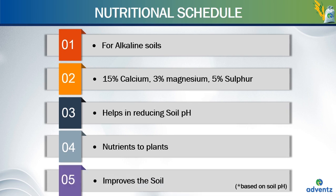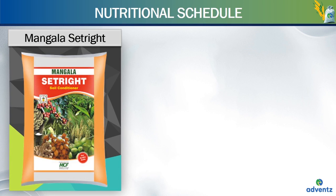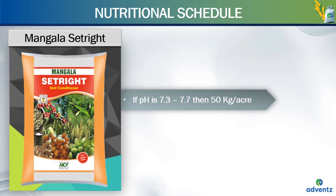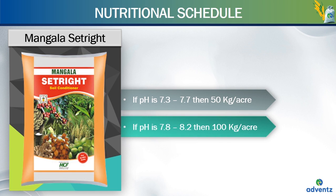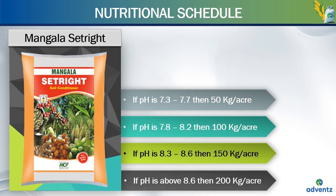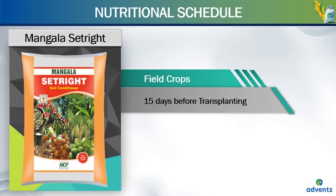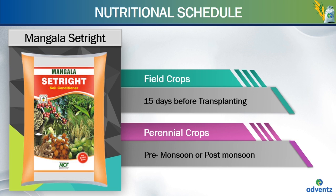It is applied in all crops and the dosage depends on the pH of the soil. If the soil pH is between 7.3 to 7.7, the dosage of Mangala Setrite is 50 kgs per acre. If the pH is between 7.8 to 8.2, the dosage needed is 100 kgs per acre. If the pH is between 8.3 to 8.6, the dosage is 150 kgs per acre. And if the pH is above 8.6, the dosage is 200 kgs per acre. Application is done 15 days before transplanting for field crops, and for perennial crops, Mangala Setrite is applied at pre-monsoon and post-monsoon, preferably two weeks prior to fertilizer application.